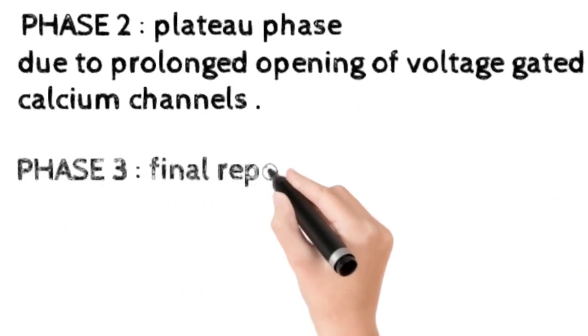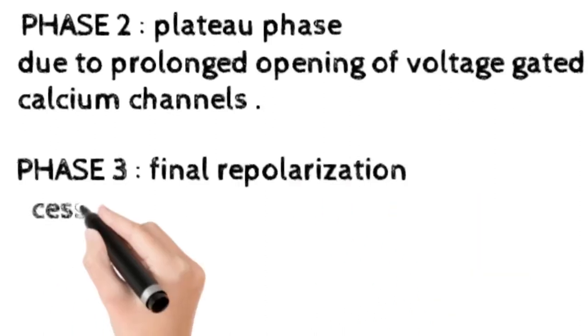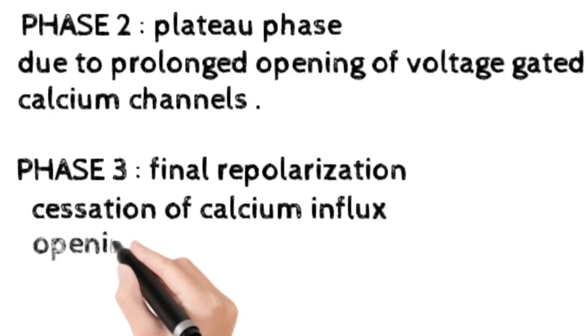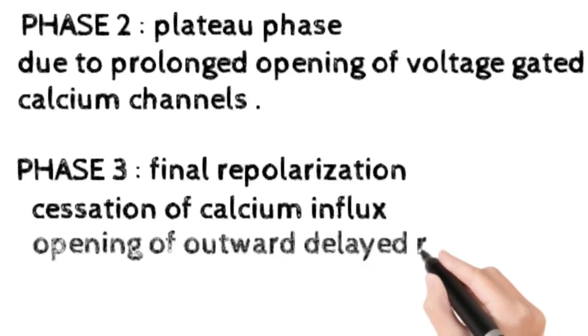Phase 3 is the final repolarization phase which occurs due to the cessation of calcium influx and opening of outward delayed rectifying potassium channels.